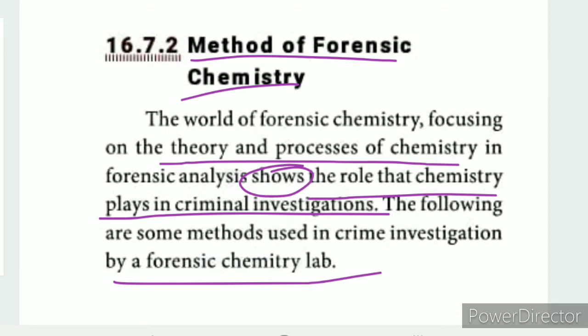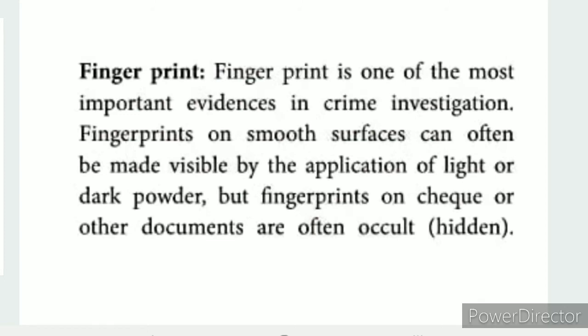The following are some methods used in crime investigation by a forensic chemistry lab. The first method is fingerprinting. Fingerprints are most important — by finding fingerprints you can identify a person.